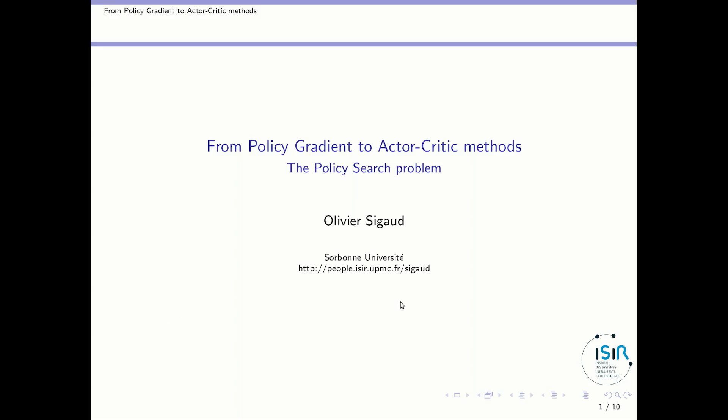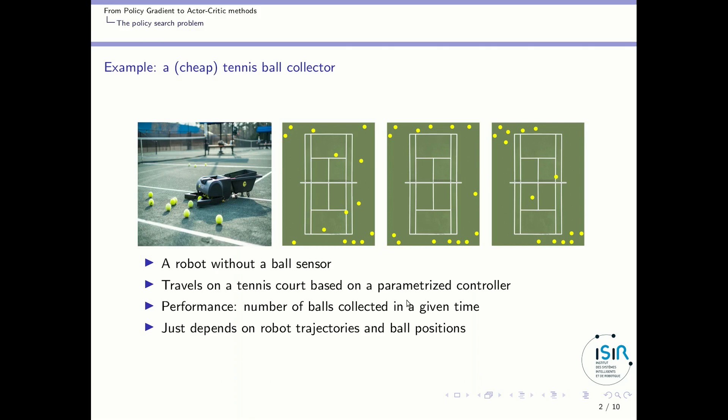Let us start these lessons by defining the policy search problem. So let's take a simple and actually existing example of a robot whose role is to collect balls. I will take the case of a very cheap tennis ball collector where the robot does not have a ball sensor.